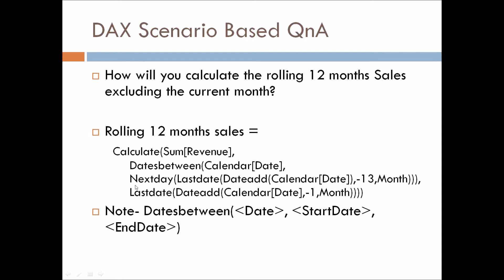Let's understand how we have calculated the start date and the ending date. For the starting date, I have used NEXTDAY, LASTDATE, and DATEADD functions. DATEADD will move us 13 months back, then LASTDATE will give us the last date of that 13th month, and NEXTDAY will give you the next day — meaning the starting date of the 12th month. For the ending date, we have used LASTDATE and DATEADD. Since we have to exclude the current month, we configured minus 1 in DATEADD's argument. Then LASTDATE gives you the last date of the previous month. In this way, we configure the start and end dates to calculate the rolling 12-month sales.